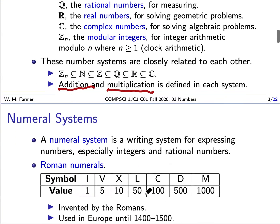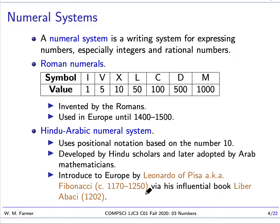Now let's talk about a different kind of system called numeral systems. I'm mentioning numeral systems because people often confuse numerals with numbers and use them interchangeably. For instance, someone will write down 2, 3, 6 and say that is a number with three digits. But that's not precise — 236 is not a number, it's a numeral that represents the number 236. As a numeral it has three digits. A numeral system is a writing system for expressing numbers.